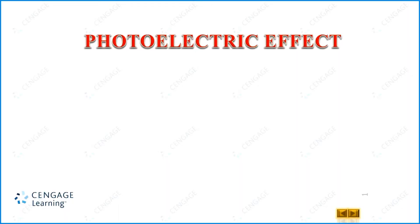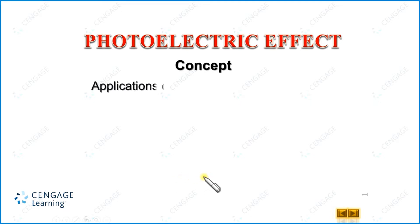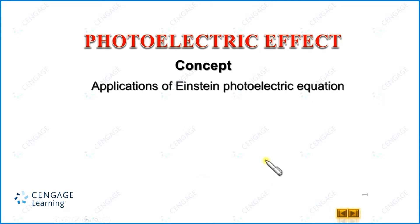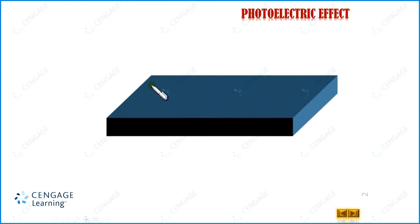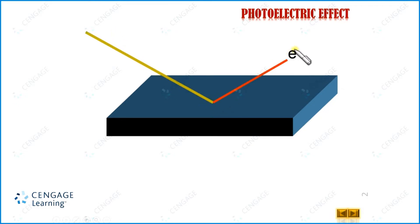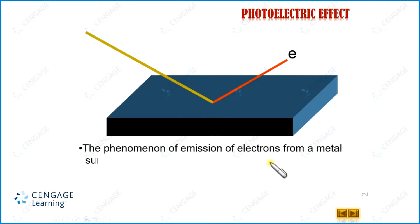Dear students, in this section we are going to learn the application of the Einstein photoelectric equation. It has been observed that various materials have the ability to emit free electrons when irradiated by visible or ultraviolet light. Ultraviolet light is energetic radiation. Suppose this is the metal plate and if we incident ultraviolet or energetic radiation, it emits electrons. The phenomenon of emission of electrons from a metal surface when exposed to electromagnetic radiation is called the photoelectric effect.